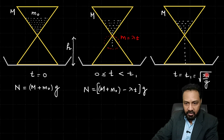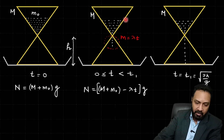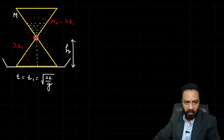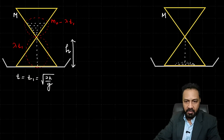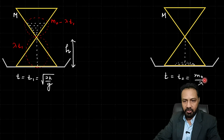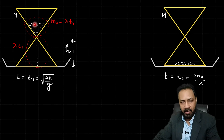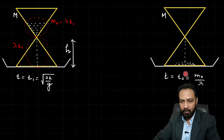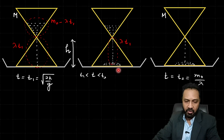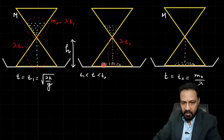Now consider the moment t₂ when the upper compartment is completely emptied. Since the total sand mass was m₀ and it empties at rate λ, the time to empty is t₂ = m₀/λ. For a general moment t between t₁ and t₂, there is some mass remaining in the upper reservoir, some mass lying on the floor, and a vertical stream of sand in free fall.